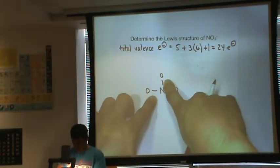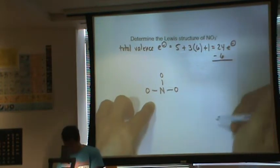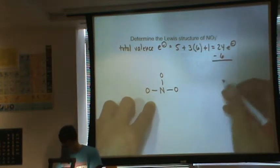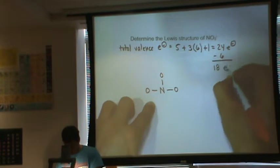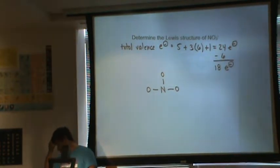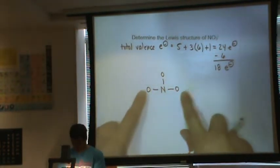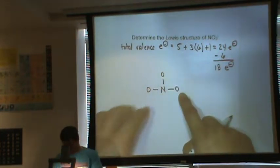Each bond is two electrons. One, two, three, four, five, six. So I'm going to use six electrons. Twenty-four minus six is going to be 18. It's starting to shut down. All right. Let's put these 18 electrons in these oxygen atoms and then we'll see if we have any left over for our nitrogen.